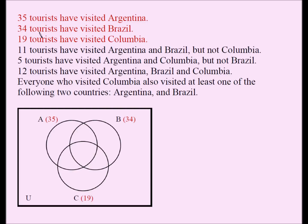The first three lines are straightforward: 35 tourists visited Argentina, meaning 35 is the sum of Argentina's four regions. 34 is the sum of Brazil's four regions. Warning: if you put 35 directly in the Argentina circle, that would be incorrect. Similarly, placing 34 or 19 directly in their circles would be wrong. 19 goes as the total for Colombia's four regions, not as a single region value — a common mistake students make.